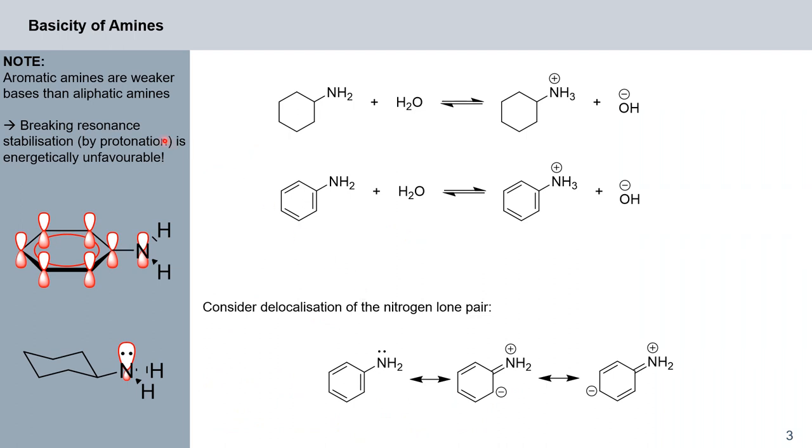Let us now compare the basic character of aliphatic amines with that of aromatic amines. Here we have cyclohexylamine and aniline. In aqueous solution, in both cases, we generate our conjugate acids. We find that for our aliphatic amine, the pKa is 10.66, and for our aromatic amine, the pKa is 4.63 only.